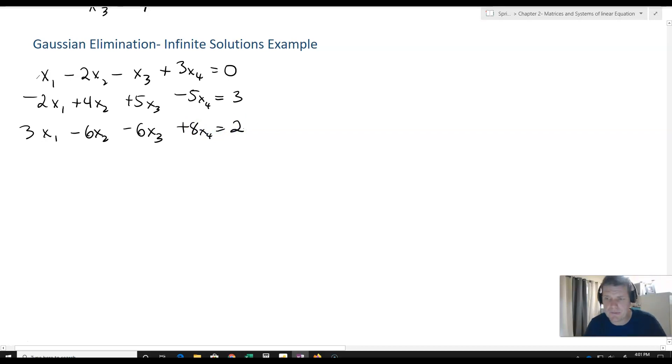The first thing I want to do is transform this into an augmented matrix so I can do some Gaussian elimination. I'll take the coefficients: 1, -2, -1, 3, with our solution 0; then -2, 4, 5, -5, 3; and finally 3, -6, -6, 8, 2.